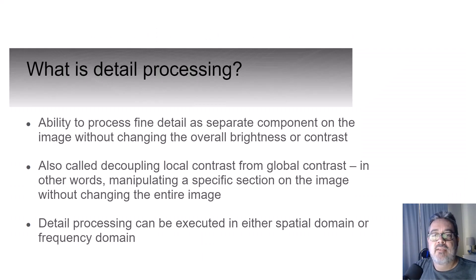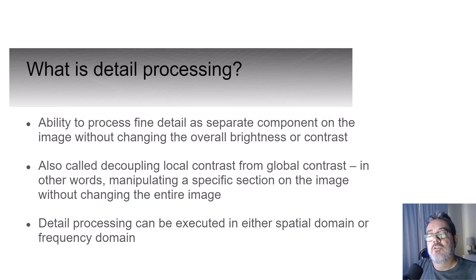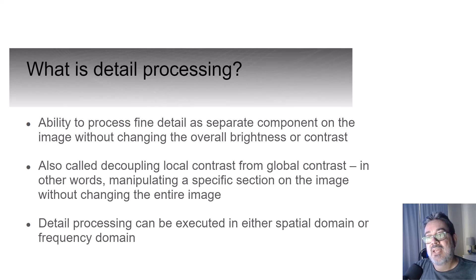What is detail processing? Two examples you might be familiar with are edge enhancement and smoothing. These allow fine detail to be processed as separate components on the image without changing the overall brightness or contrast — it's either going to sharpen or soften the image. They call this decoupling local contrast from global contrast, meaning you're manipulating a specific section without changing the whole image. Detail processing can be done in either spatial or frequency domains, but not the intensity domain, as that's what changes brightness and contrast.